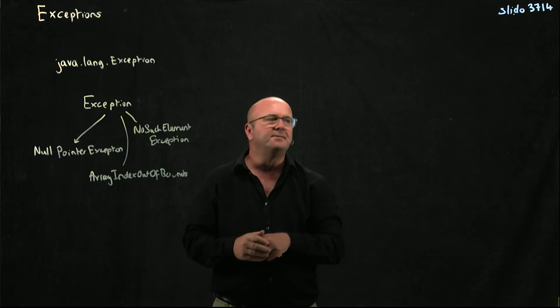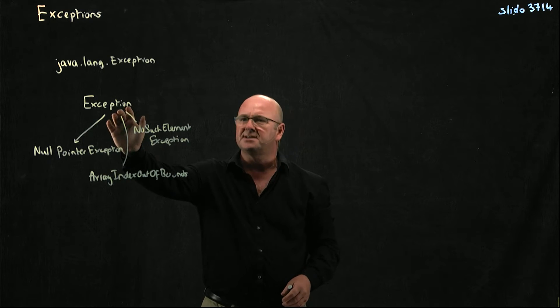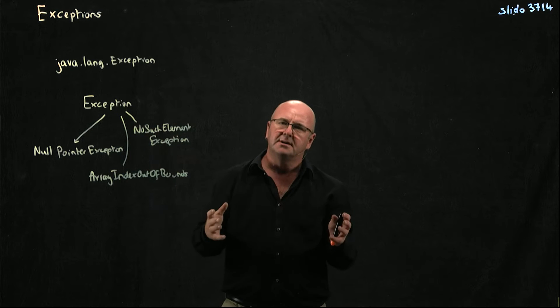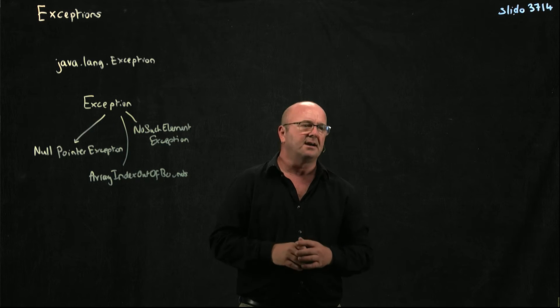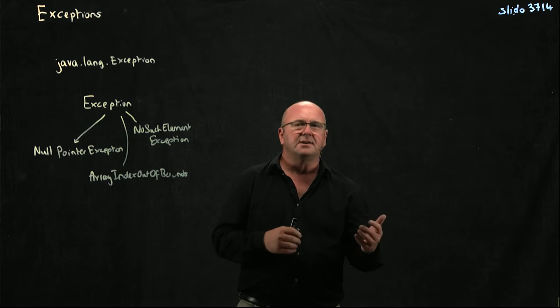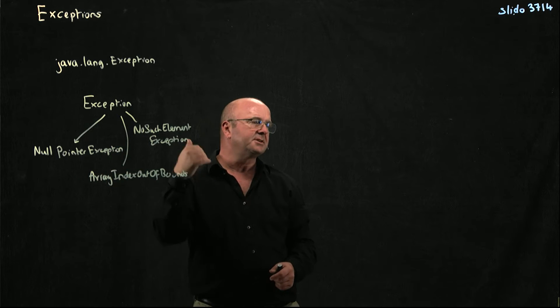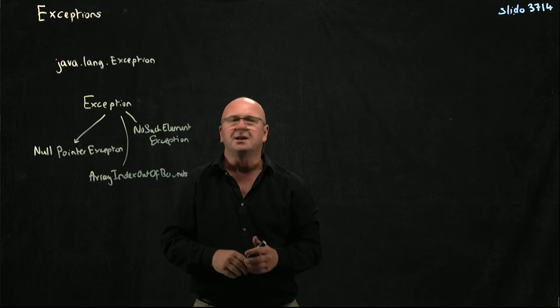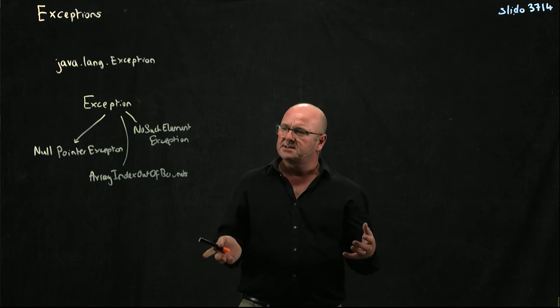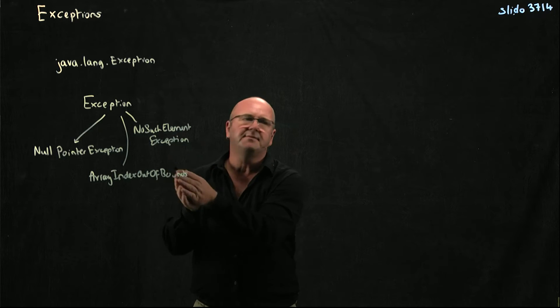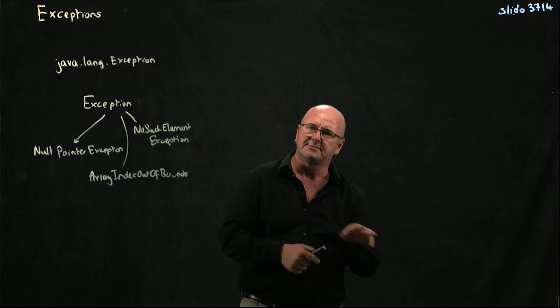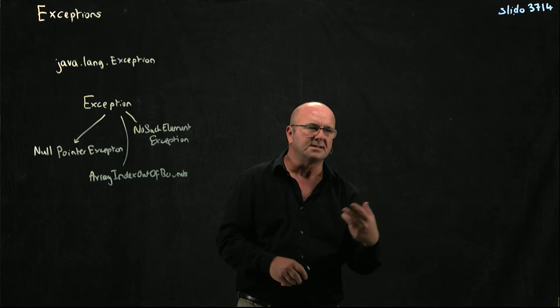On the other hand, if you just got an exception, if every time you had an error it just said exception, there's an exception at line 52, you wouldn't know. Is it a null pointer exception? Is it an array out of bounds exception? Is it a no such element exception? What's going on? And so the idea is that the name of the exception clues you into what's going wrong and it helps you in that debugging process.